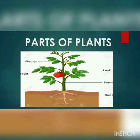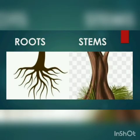Parts of a plant. There are 5 main parts of a plant: roots, stem, leaves, flowers and fruits. Roots grow under the ground. They supply water to all parts of the plant. The stem is a very hard and woody part of the plant.